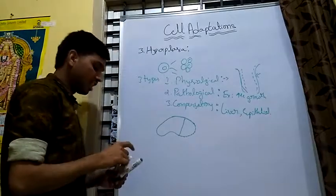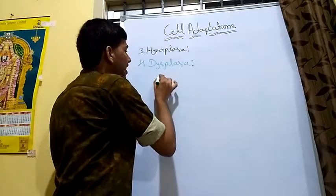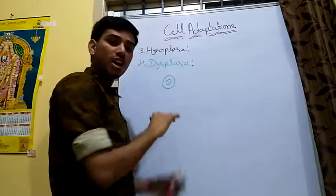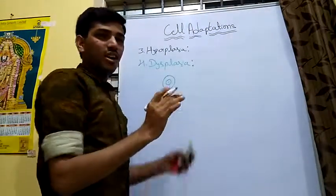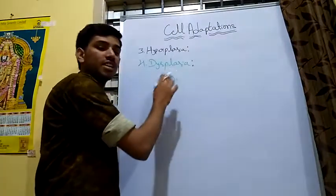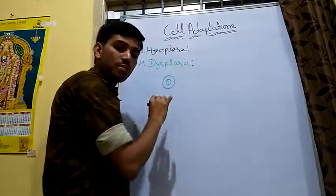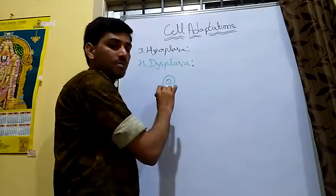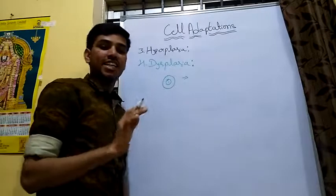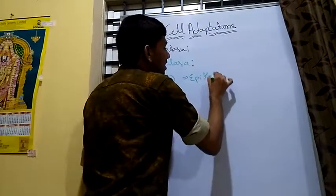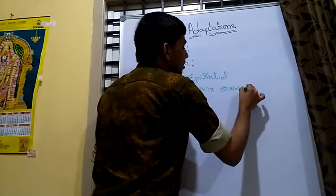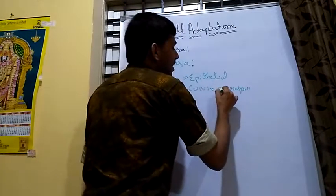Next, we move to dysplasia. Dysplasia is the abnormal changes in size, shape, or organization of the cell. It is not fully differentiated within cell adaptations, but since changes take place in shape and organization, it is considered a cell adaptation. Dysplasia is commonly seen in epithelial cells of the cervix and respiratory tract.